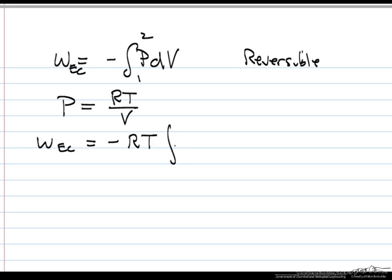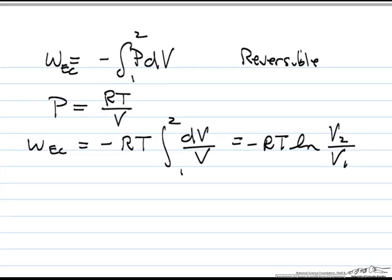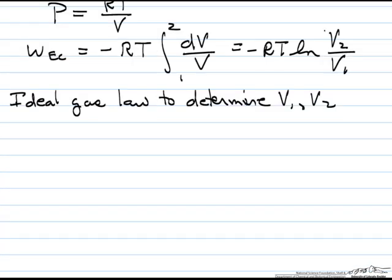since R and T are constant, integral of DV over V from state one to state two, which is minus RT, the natural log, volume two over volume one. So in order to determine the work we need the volumes, so we have to go back to the ideal gas law.